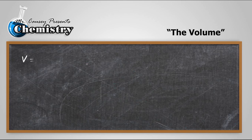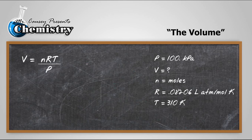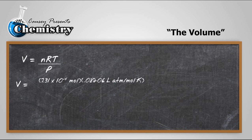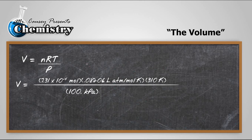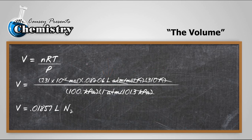Let's take that amount over to the original problem and fill in our moles. Volume is going to equal the moles times R times temperature divided by the pressure. Notice I'm changing the pressure into atmospheres. Moles cancel out, Kelvin cancels out, and atmospheres cancel out, leaving us with liters. Plug and chug and we get 0.1857 liters of nitrogen.